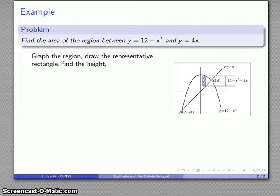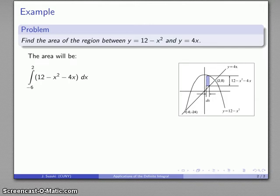The width is going to be a tiny portion of the x-axis called dx. So if I want to find the area, I'm going to take the areas of all these representative rectangles: height of 12 minus x squared minus 4x times width dx. That's the area of one representative rectangle.